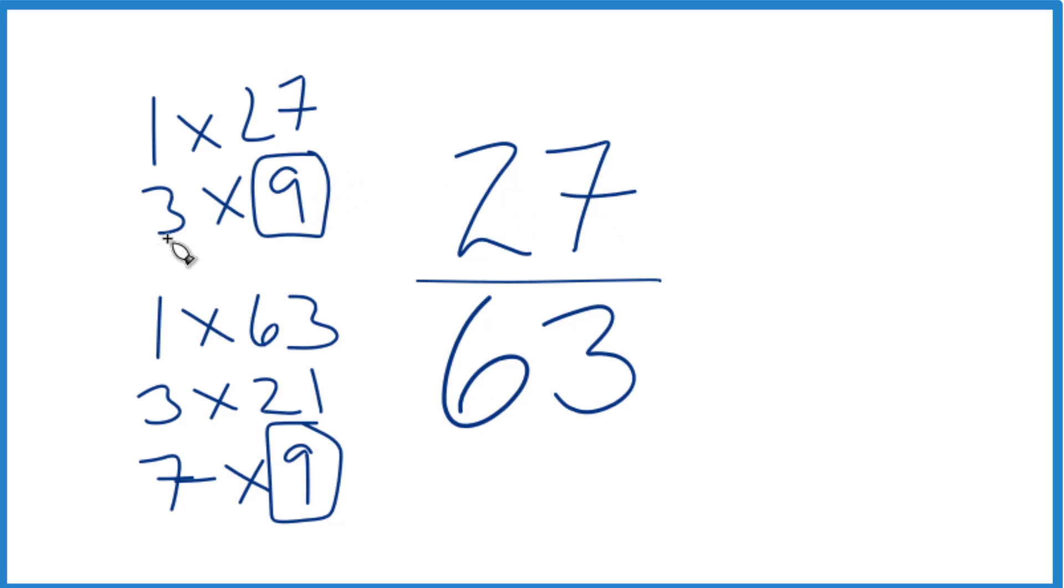27 divided by 9, that's 3. So we get 3 as our numerator, and then 63 divided by 9 gives us 7, and we're done.